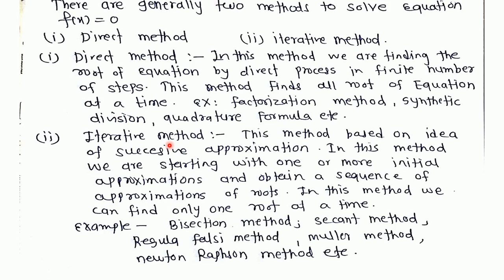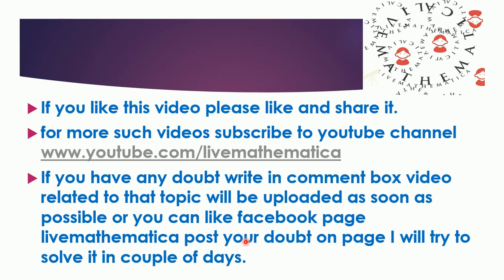This method is based on successive approximation. In this method, we start with one or more initial approximations or initial guesses and obtain a sequence of approximations to the root. We can find only one root at a time. Examples of iterative methods: bisection method, regula falsi, Newton-Raphson method, etc.